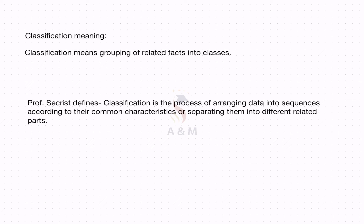Now, what else is classification of data? After collecting the data, it should be classified. Classification means grouping of related facts into classes. For example, population of the city can be grouped according to their sex, age, marital status, etc.